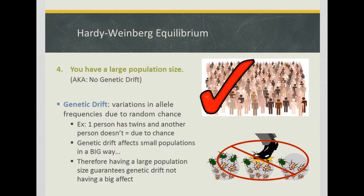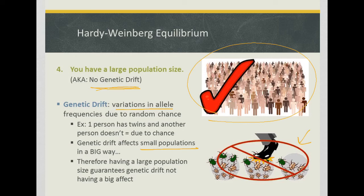The fourth condition is that you must have a large population size, meaning no genetic drift. Genetic drift refers to variations in allele frequencies due to random chance. For example, one person having twins and another not is totally due to chance — that would be an example of genetic drift. Genetic drift affects small populations in a really big way. If you have a small population, someone having twins and passing on double their traits affects a population of 10 a lot, but doesn't affect a population of 100,000 nearly as much. Having a large population size ultimately ensures genetic drift does not have a significant effect.